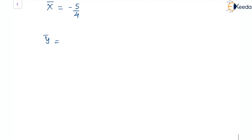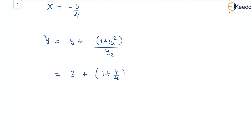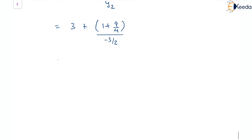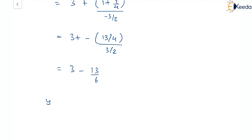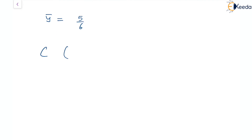Similarly, the y-coordinate of the center of curvature is given by y + (1 + y1²)/y2. This is 3 plus (1 + 9/4) divided by (minus 3/2), which is 3 plus (13/4)/(minus 3/2). This gives 3 minus 13/6, and taking the LCM we get (18 minus 13)/6 = 5/6. So the center of curvature c is (minus 5/4, 5/6).